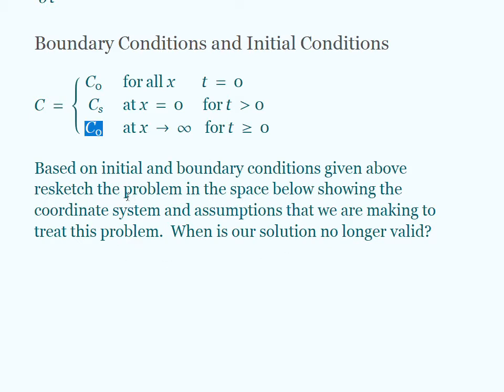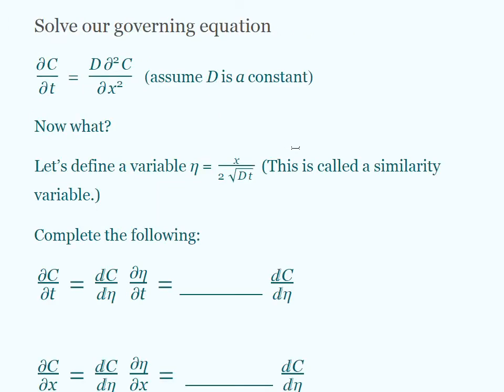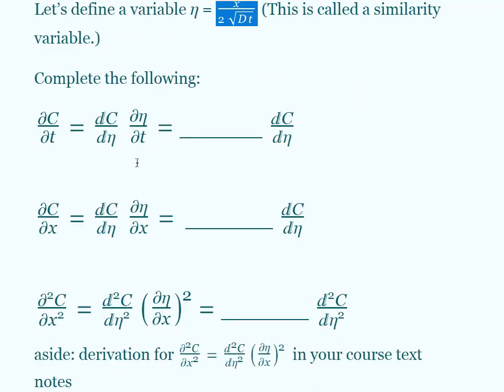We're going to take a look at this question after we solve our problem. The way we would solve this governing equation is using the similarity variable. And for this type of problem of this form, this similarity variable eta that's used is x over 2 times the square root of Dt. This works in this form of a problem. I'm going to let you work on some of these in class, so I'm not going to give you the answers quite yet for these.